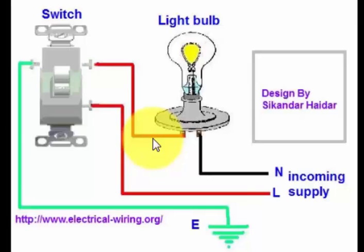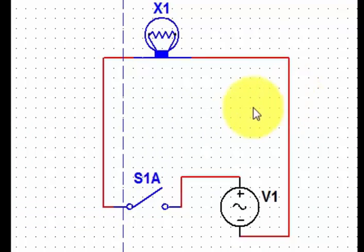But I also have another diagram which will help you understand this circuit completely. Here I've shown this diagram in which I show a light and a one-way switch, and this is the power source of AC supply. So first I connect this neutral wire to the light socket.